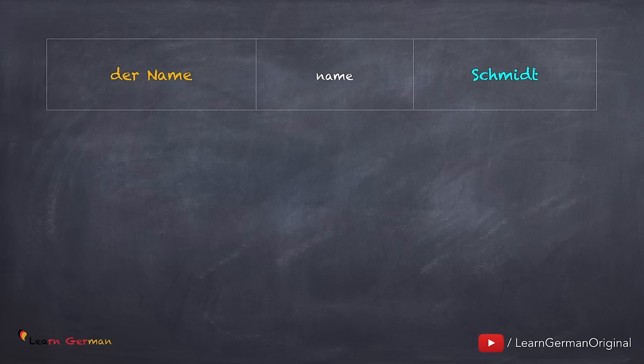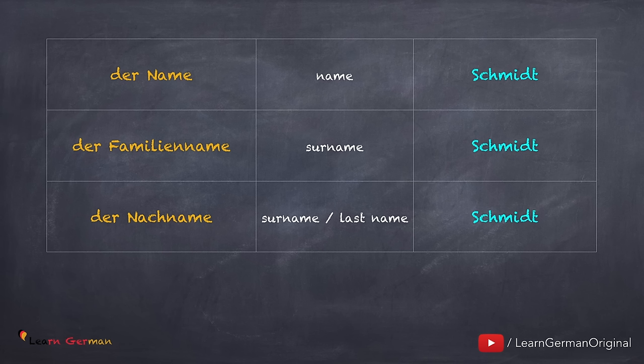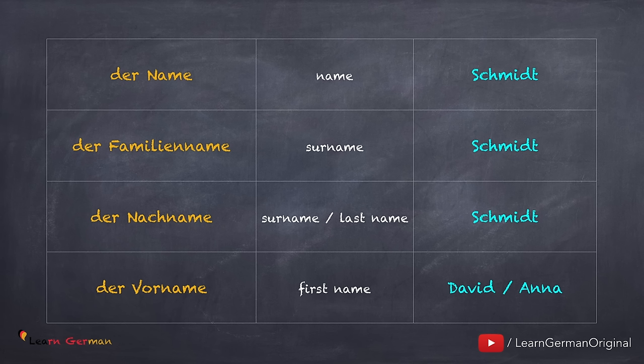Now we'll cover terms you'll come across while filling up a form. Der Name — mostly you would fill in your surname here. Other words for der Name are der Familienname or der Nachname; for example, Schmidt. The next one is der Vorname — the first name — for example David or Anna. We are learning all these words with their articles, but on the form they are written without articles.